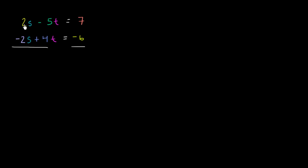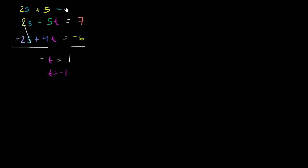You add the left-hand sides — these cancel out. You're left with negative t, which is equal to 7 plus negative 6, equal to 1, or t is equal to negative 1. And if t is equal to negative 1, the top equation simplifies to 2 times s, negative 5 times negative 1 is plus 5, so 2s plus 5 is equal to 7, which means 2s must equal 2, and s is equal to 1. So we have s equals 1. That was pretty straightforward.